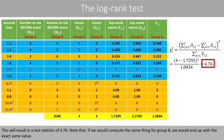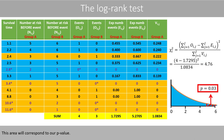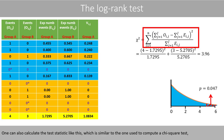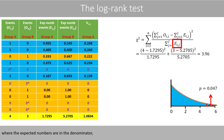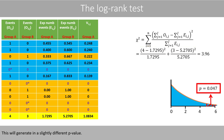Note that if we compute the same thing for group B, we end up with the exact same value. We then use statistical software to calculate the area to the right-hand side of 4.76 in the chi-square distribution with one degree of freedom. The degree of freedom is equal to the number of groups minus one. This area corresponds to our p-value. Note that there are different ways to compute a log rank test, which means different statistical software tools might report different p-values. The calculations shown here are the same as those used in the R package survival. One can also calculate the test statistic using a formula similar to a chi-square test, where the expected numbers are in the denominator and we sum the calculations over two groups, which will generate a slightly different p-value.